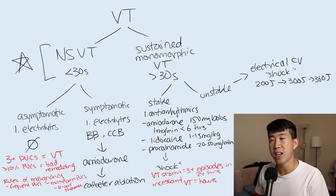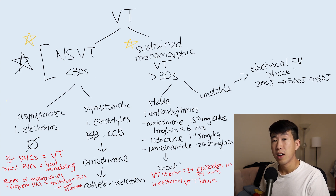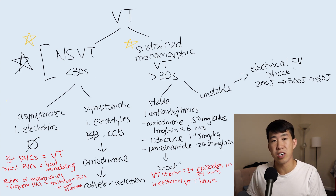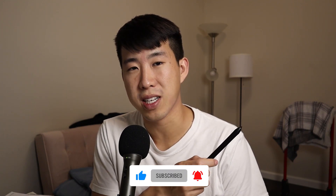To summarize: the key first step is identifying whether this is non-sustained or sustained ventricular tachycardia. From there, treatment is based on symptoms for non-sustained VTAC, and on hemodynamic stability for sustained VTAC. I hope this quick video was useful. If you haven't seen the first video on evaluating and diagnosing wide complex tachycardias — differentiating SVT with aberrancy from VT — check that out as well.